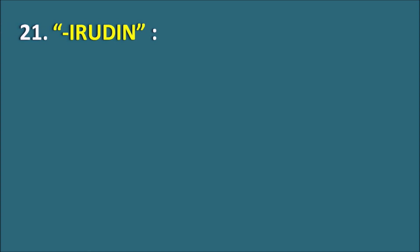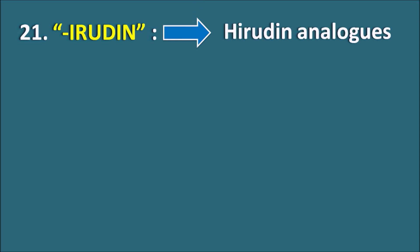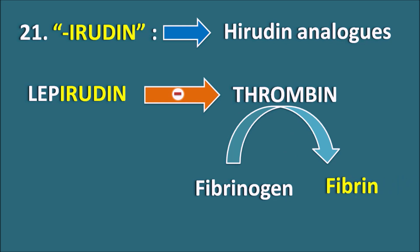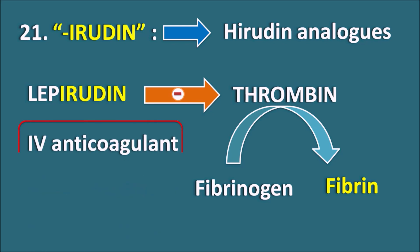The 21st suffix is Irudine. Irudine indicates they are hirudin analogs. Hirudin is a thrombin inhibitor obtained from the saliva of the leech. From this, the drug Lepirudin is derived. Lepirudin inhibits thrombin activity. Thrombin is responsible for conversion of fibrinogen to fibrin, and fibrin forms the framework within the platelets responsible for platelet aggregation and clot formation. By blocking thrombin activity, Lepirudin decreases fibrin formation and can be used as an anticoagulant.